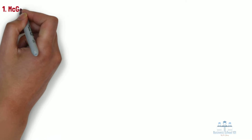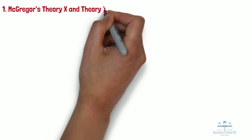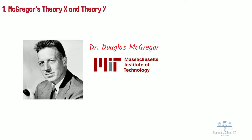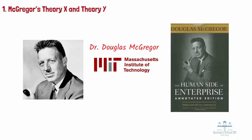Section 1: McGregor's Theory X and Theory Y. The idea that a manager's attitude has an impact on employee motivation was originally proposed by Dr. Douglas McGregor, a management professor at MIT during the 1950s and 1960s. In his 1960 book, The Human Side of Enterprise, McGregor proposed two theories by which managers perceive and address employee motivation. He referred to these opposing motivational methods as Theory X and Theory Y management.